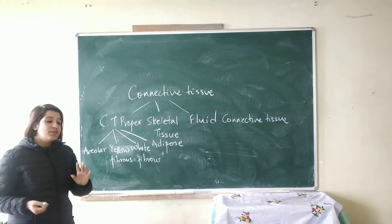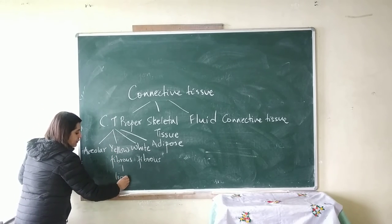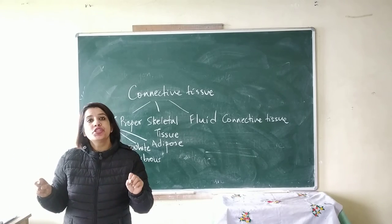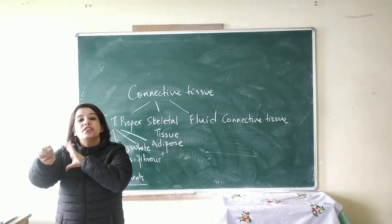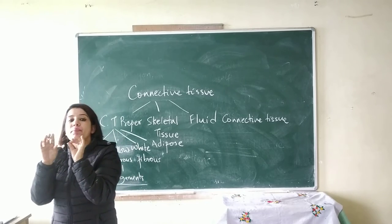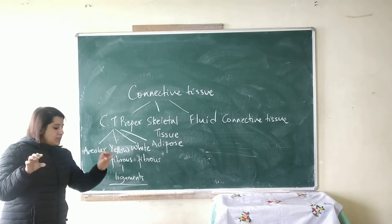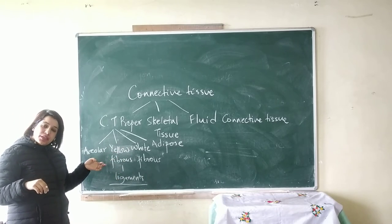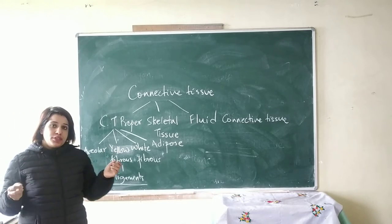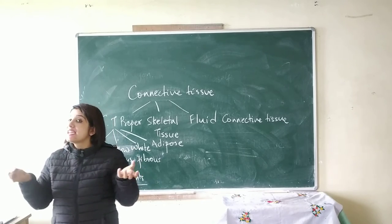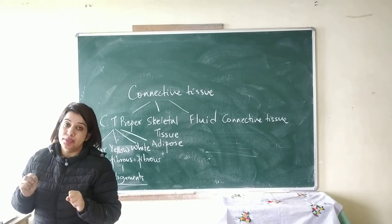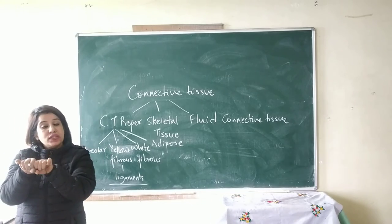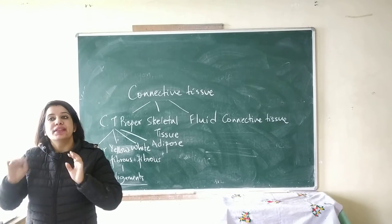Yellow fibrous tissue is found in the ligaments. Ligaments are tissues which connect one bone to another — they act like a glue, helping bind or connect bones to bones. The yellow fibrous tissue is very strong, meaning it has excessive strength, but it is not flexible.